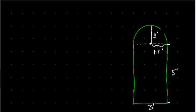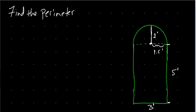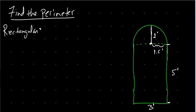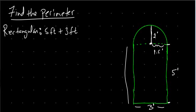Now we can find the perimeter of this window. For the rectangular part of the window, we just add: the left side is five feet, plus the bottom is three feet, plus the right side is five feet. That gives us a total of five plus five is ten, plus three is thirteen feet.